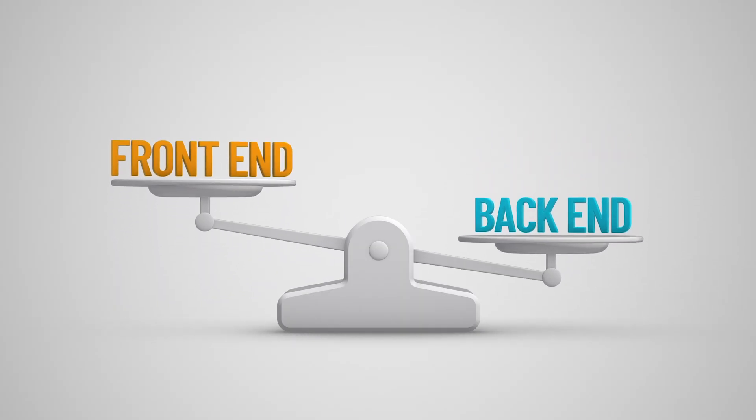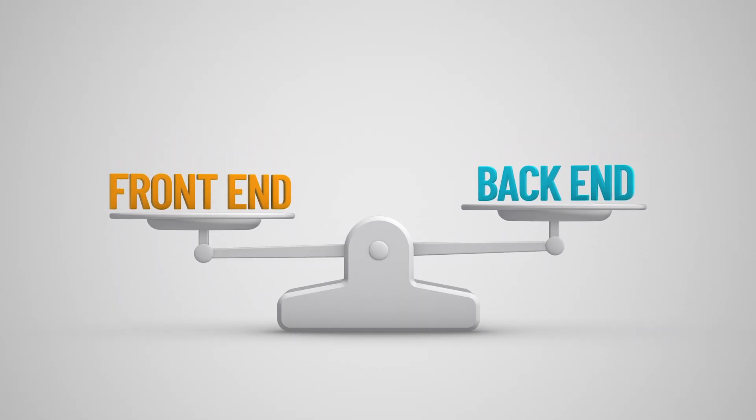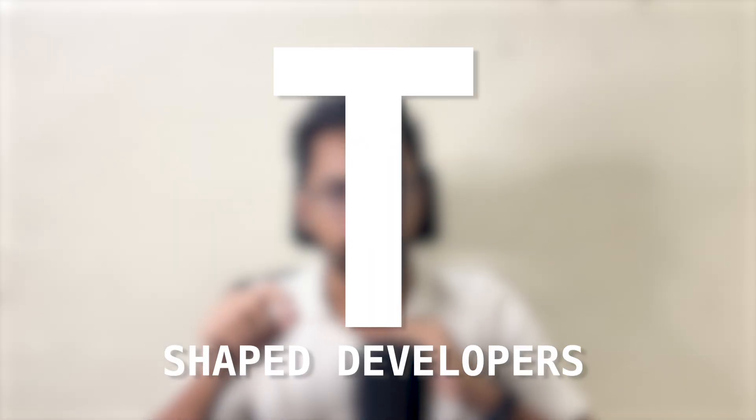If you are a full-stack developer, you can work on both front-end and back-end. Let's look at the front-end and back-end. If you want to be a full-stack developer, you can be called a T-shaped developer. As a T-shaped developer, you can go horizontal and vertical — the vertical line is your expertise.